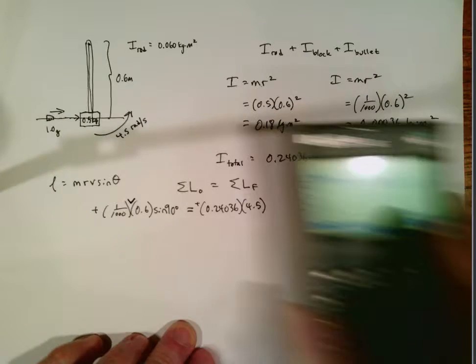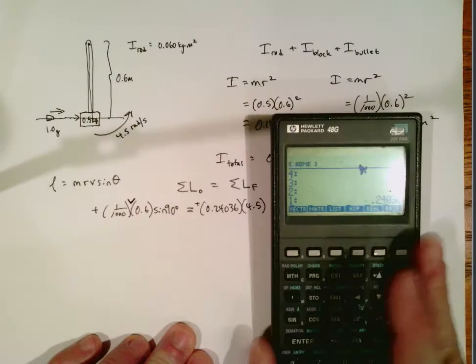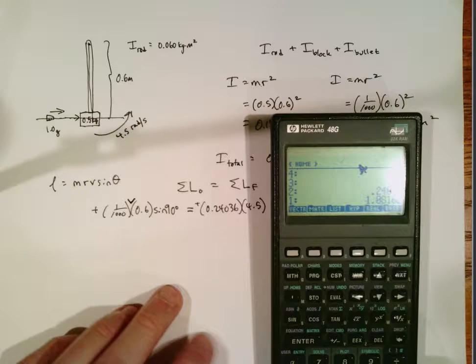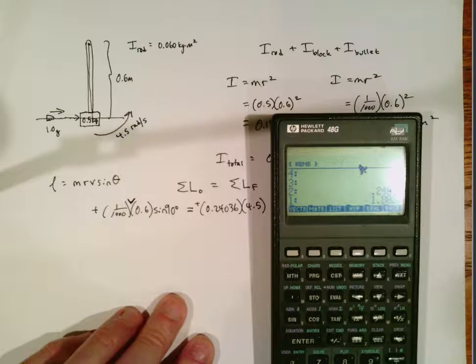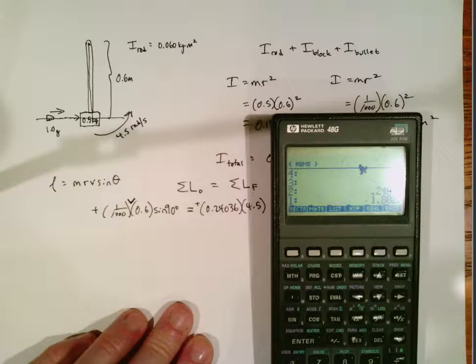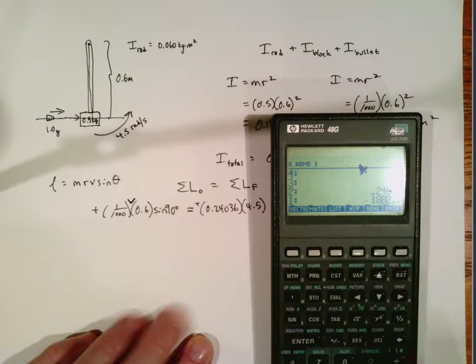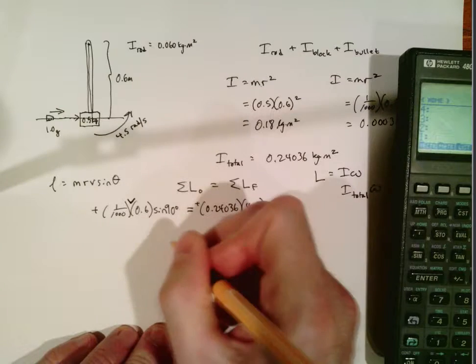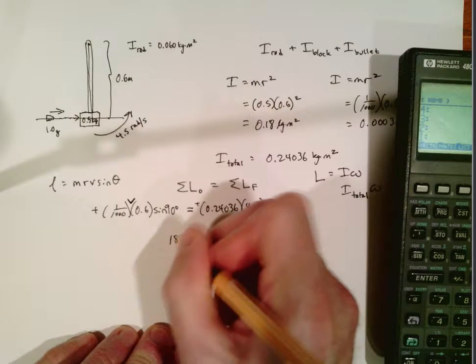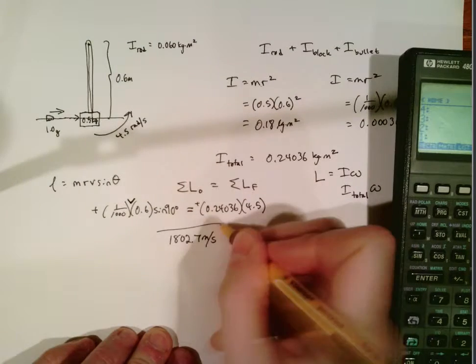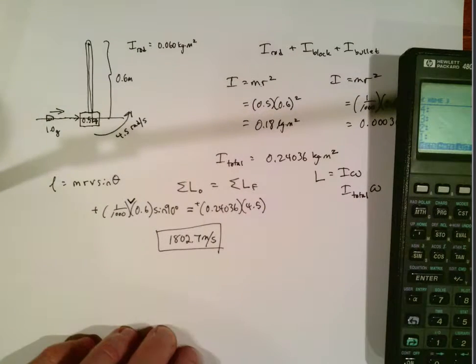So now it's really just a matter of plugging the numbers into the calculator. 4.5 times 0.24036 and I'm going to divide by 0.6 and I'm going to multiply by a thousand. And that gives me a very large number. 1802.7 meters per second. However that is realistic for a bullet and that's our final answer.